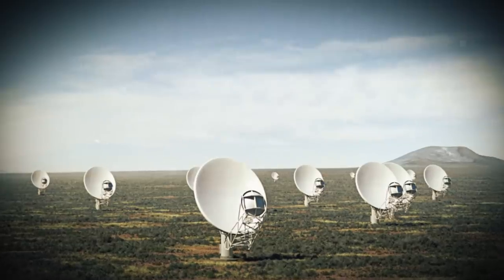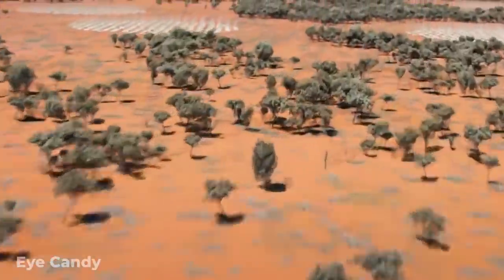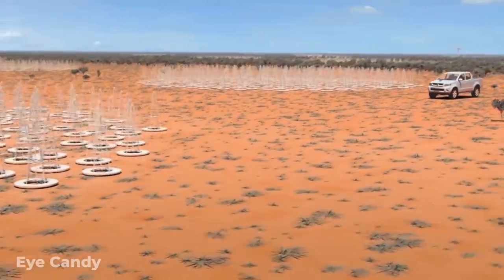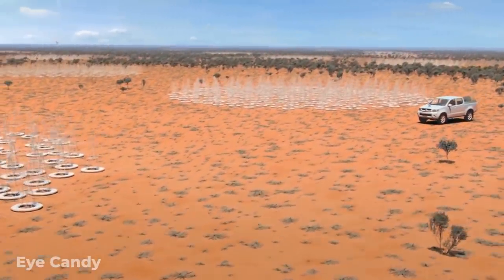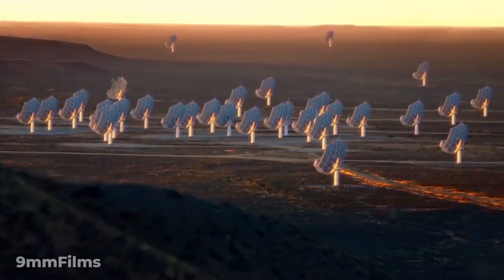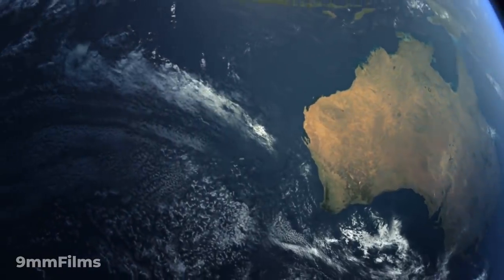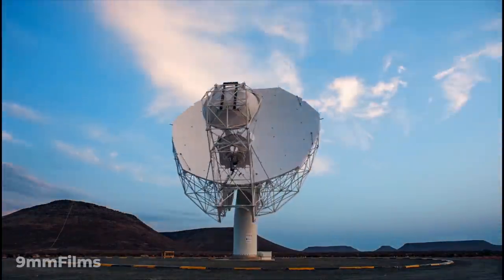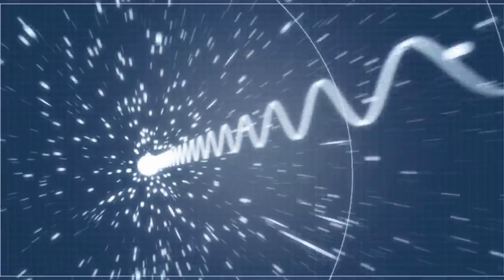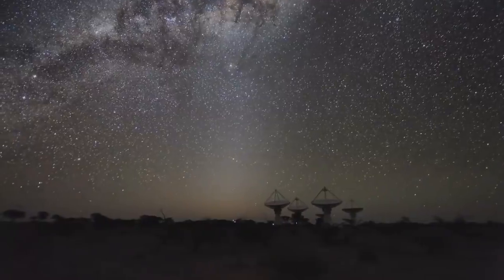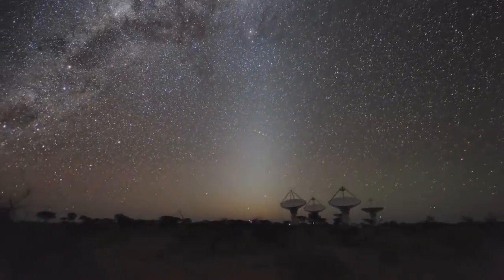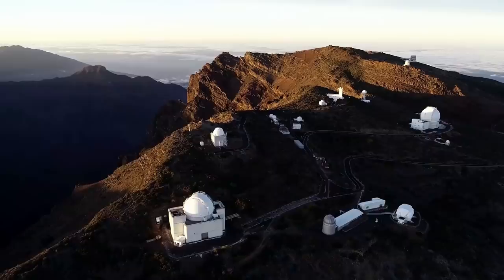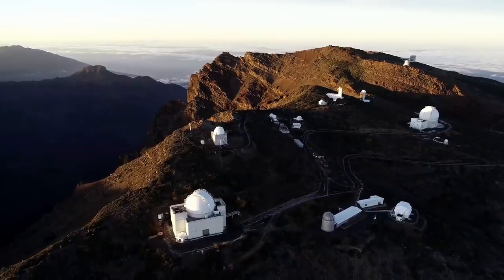But the future looks promising. Both ASKAP and Meerkat are a part of the ongoing Square Kilometre Array project. The SKA project aims to build the largest radio telescope in the world, comprised of thousands of radio antennae spread across Australia and South Africa. When it's finished, it will have, as the name suggests, a total light-collecting area of one square kilometre. The array will hopefully be complete sometime within the next decade and will have 50 times the sensitivity of any other currently existing radio instrument.